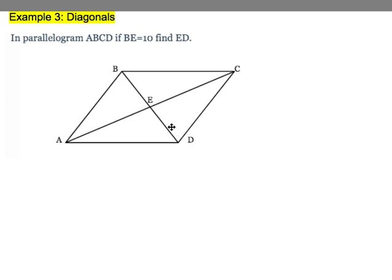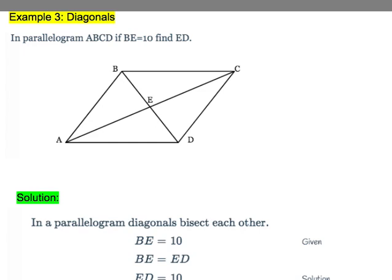Well, we know that these are congruent. So if parallelogram diagonals bisect each other, and BE is equal to 10, then because BE is congruent to ED, ED must also be 10. So these are the types of problems we're going to be facing when talking about diagonals.